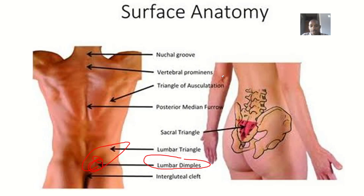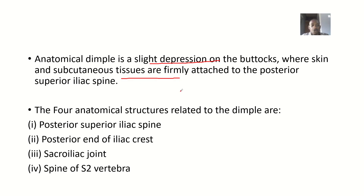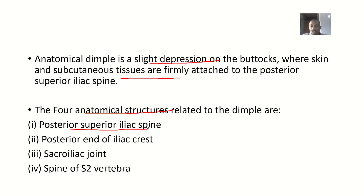The posterior superior iliac spine is located here, and at this place the skin and the subcutaneous tissue are tightly attached. So the four anatomical structures related to the anatomical dimple or lumbar dimple — first, we have the posterior superior iliac spine.